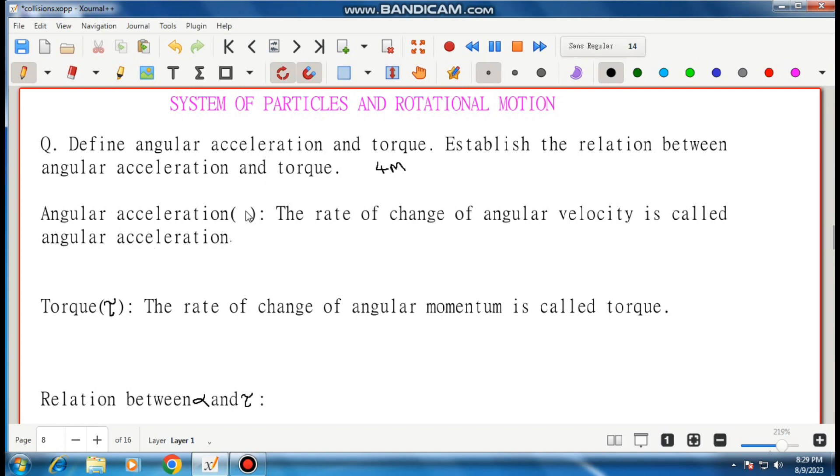The first one is angular acceleration. Angular acceleration is denoted by alpha. The definition is the rate of change of angular velocity is called angular acceleration. Then alpha is equal to d omega by dt, the rate of change of angular velocity where omega is called angular velocity.